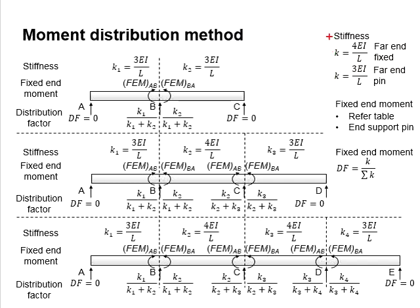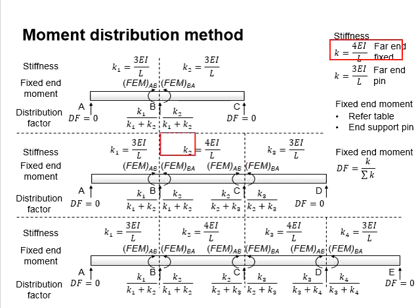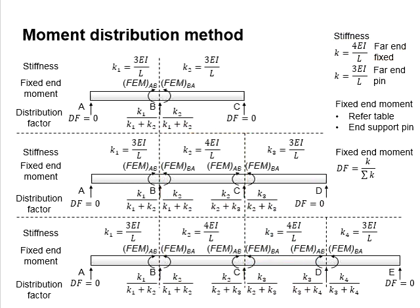This leads to two possibilities of support conditions for a segment of the continuous member. The stiffness is equal to 4EI/L when both ends are fixed — referring to the interior segments. For a member with one end fixed and the other end pinned, the stiffness is equal to 3EI/L.